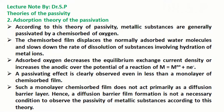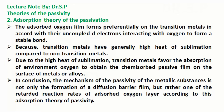A passivating effect is clearly observed even in less than a monolayer of chemisorbed film. Such a monolayer chemisorbed film does not act primarily as a diffusion barrier layer. Hence, diffusion barrier film formation is not a necessary condition to observe the passivity of metallic substances according to this theory. The adsorbed oxygen film forms preferentially on transition metals in accord with their uncoupled d-electrons interacting with oxygen to form a stable bond, because transition metals have generally high heat of sublimation compared to non-transition metals.